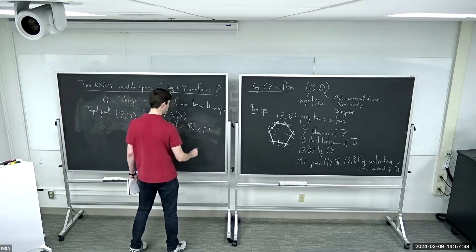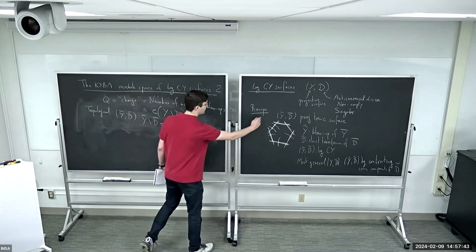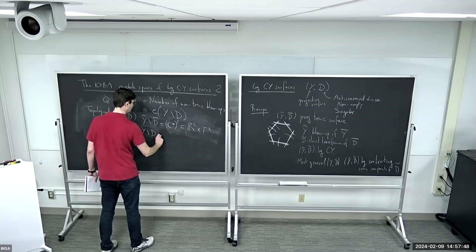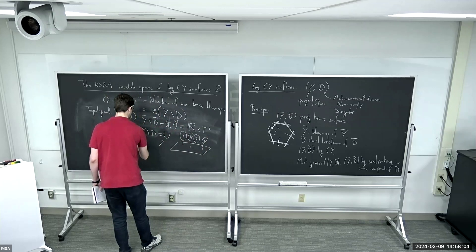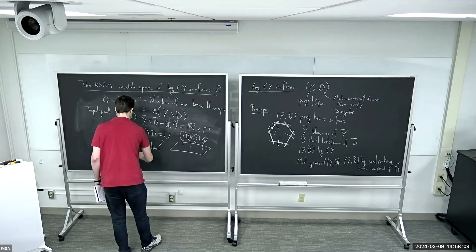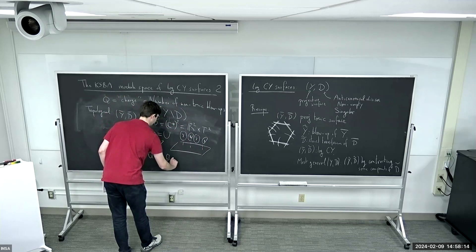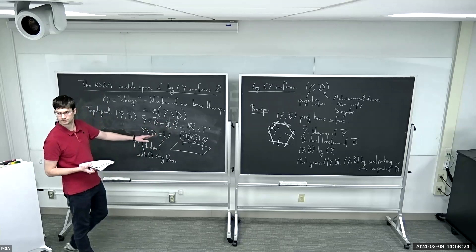At a purely topological level, if you start with something toric, then the interior is just C-star squared — so topologically just like R2 cross T2 — it's a trivial fibration of two tori. And when you do this process, you will get some surface (Y, D) where the complement Y minus D is now a T2 fibration with Q singular fibers. Everything is a T2 fibration.